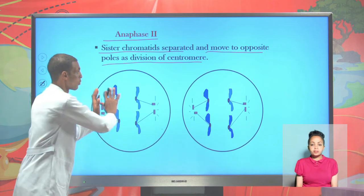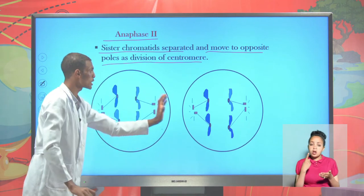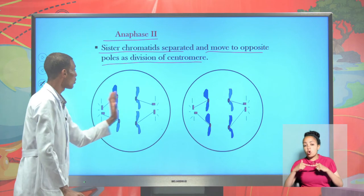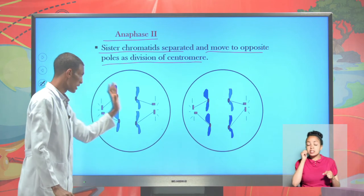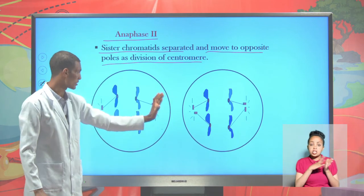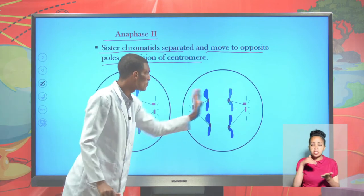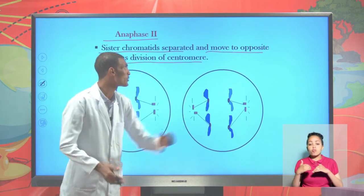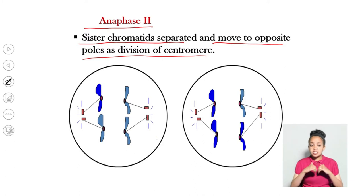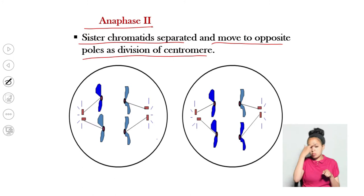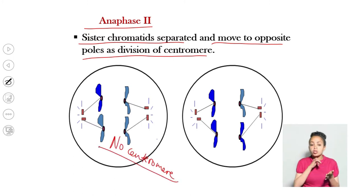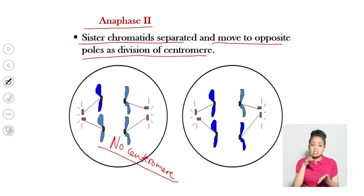What moves to the opposite pole is the sister chromatid only. The copy chromatid moves in one direction and the original in another. They separate from each other. Separation of sister chromatids occurs here because there is division of the centromere. The only stage where centromere division is found is during anaphase II.